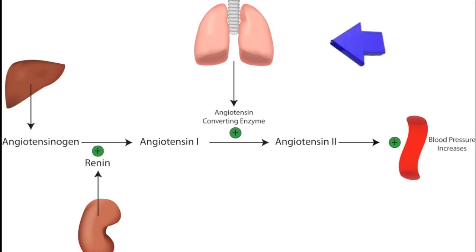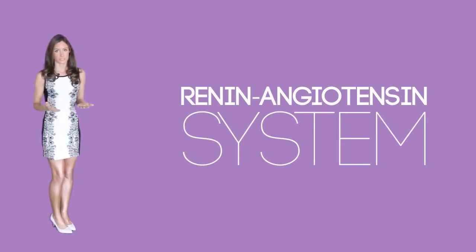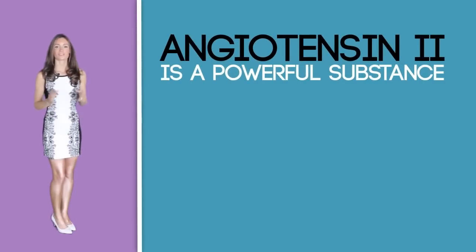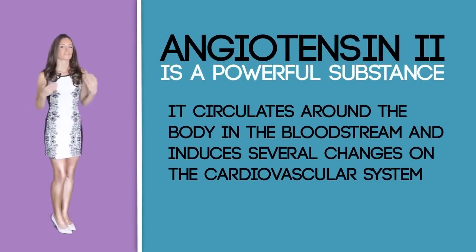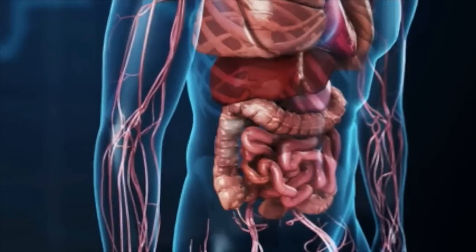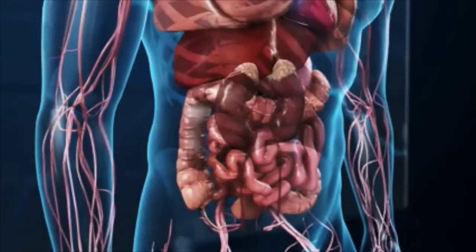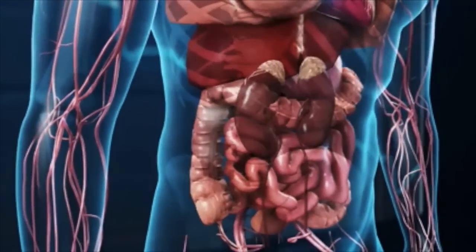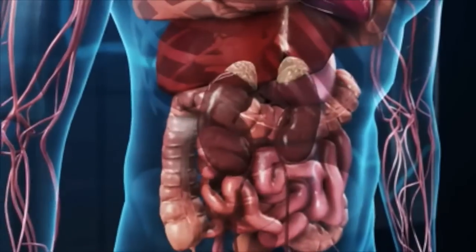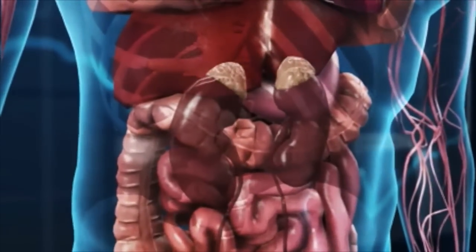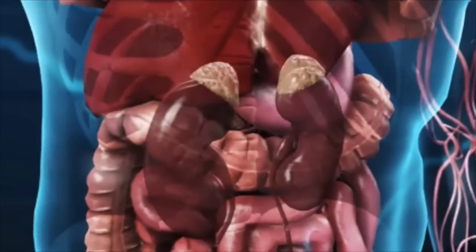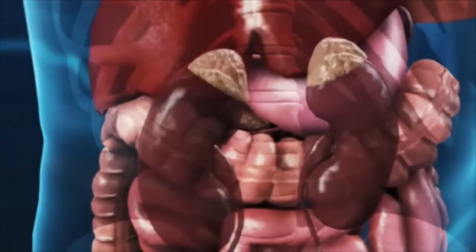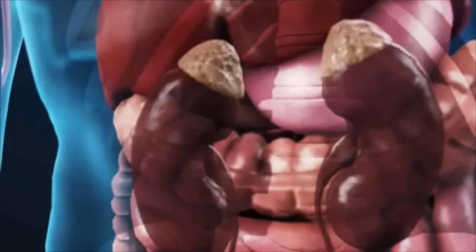This whole mechanism is known as the renin-angiotensin system, also abbreviated as RAS. Angiotensin 2 is a powerful substance that circulates around the body in the bloodstream and introduces several changes in the cardiovascular system, such as stimulating the adrenal cortex to release aldosterone and constricting the blood vessels around the body. Aldosterone increases the reabsorption of water and sodium into the tubules of the kidneys.